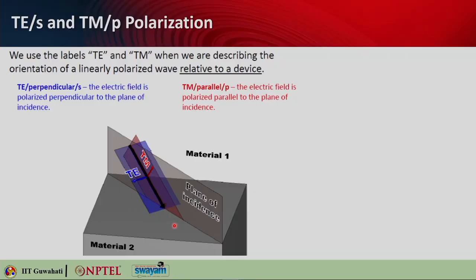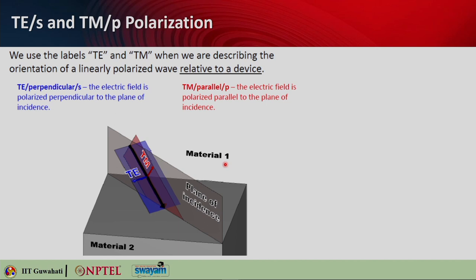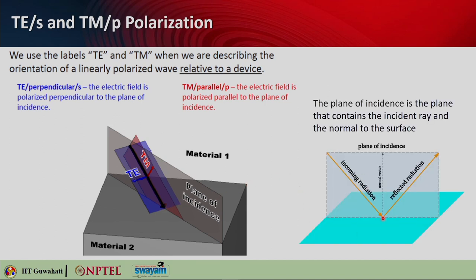Let us move on to the concept of TE and TM polarization. TE polarization is also called S polarization, where S stands for the German word 'senkrecht' meaning perpendicular. We have two materials with an interface, an incident ray, a reflected ray, and a normal to the surface. The plane containing these three vectors is called the plane of incidence.